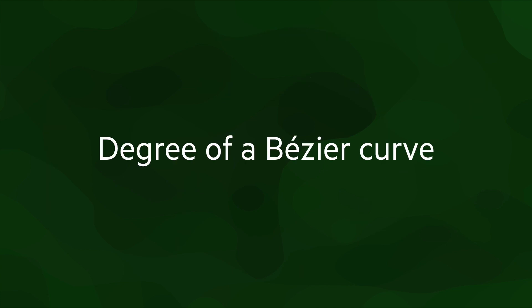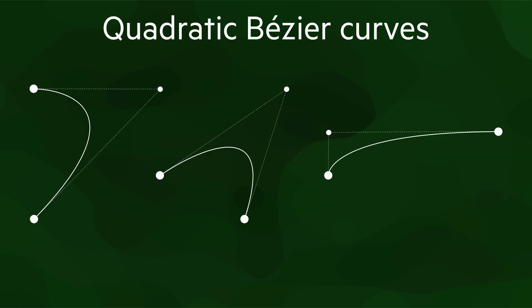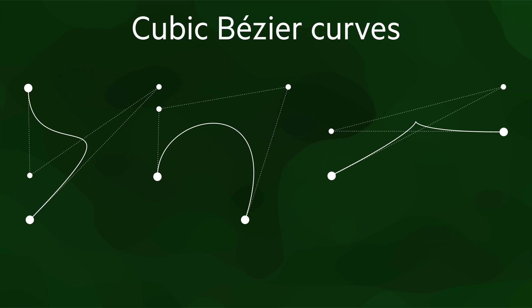Bézier curves have a degree, which is determined by the number of points in them. With 3 points, you have a quadratic Bézier curve, just like you can form a quadratic polynomial passing through 3 points. And with 4 points, you have a cubic Bézier curve. In theory, any number of control points can be used, but it is generally better to stick to Bézier curves of a relatively low degree, and the most common ones found in practice are cubics.